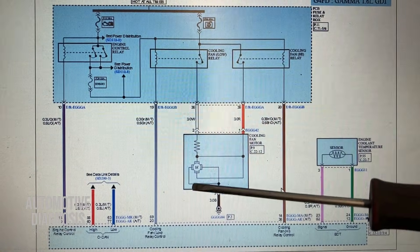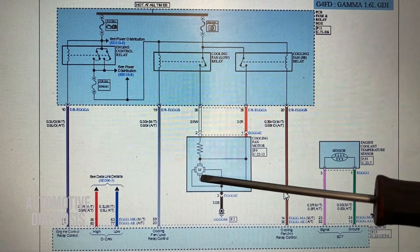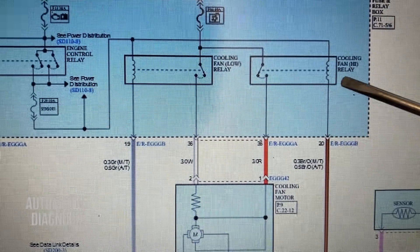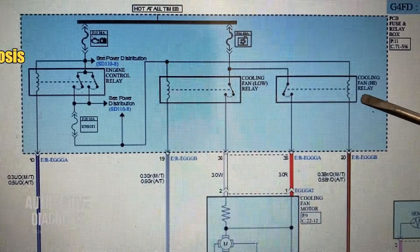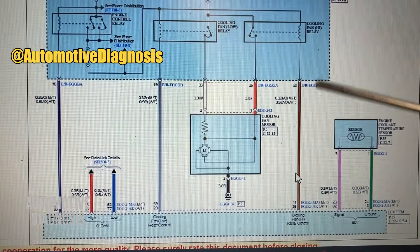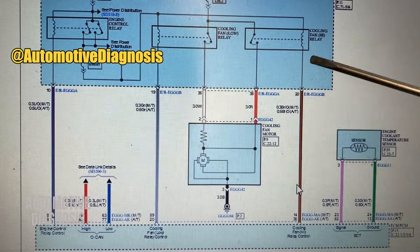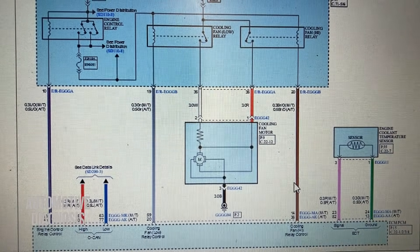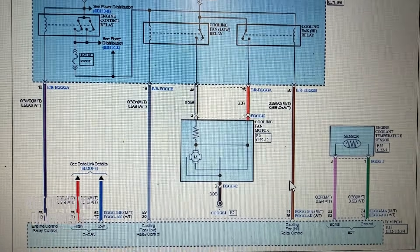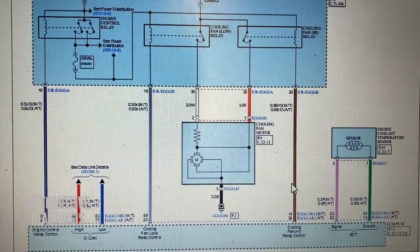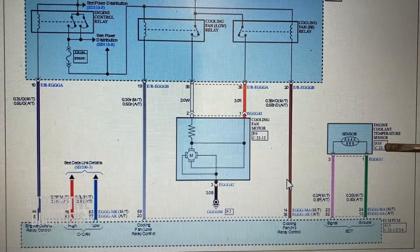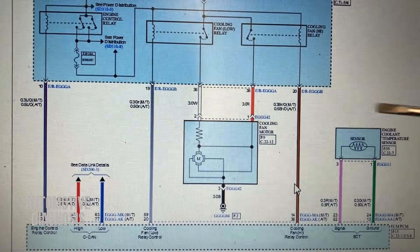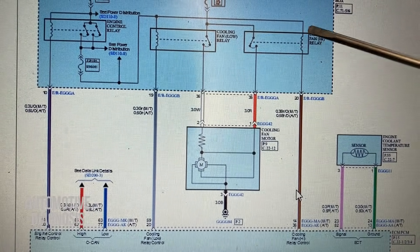First, let's have a look at the wiring diagram for this car. This engine comes with only one cooling fan, not two. There's a cooling fan low speed relay and a high speed relay inside the engine fuse box, both controlled by the ECM. When the engine is running, the ECM monitors the engine coolant temperature sensor and based on the temperature range, it activates either the low or high speed cooling fan relay.